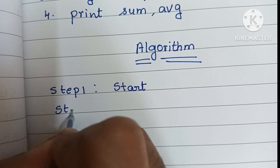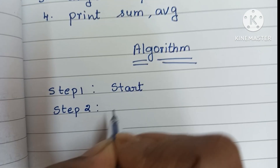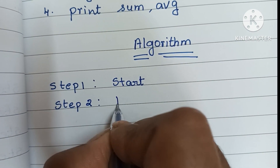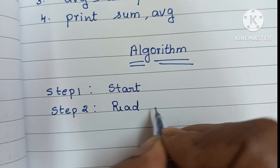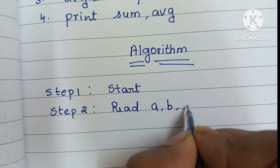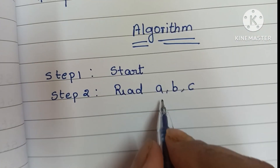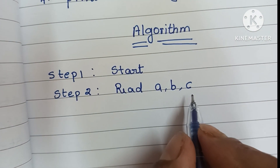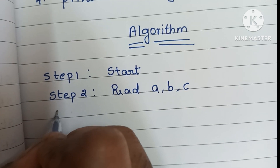In step two, we have to read three variable values — that is a, b, and c — where a, b, c represent three number values.